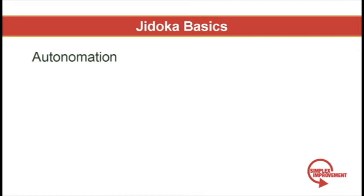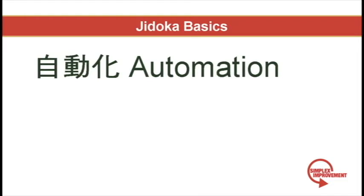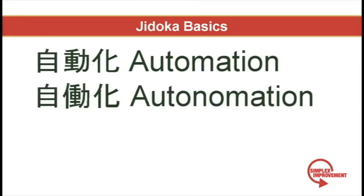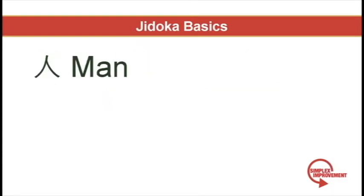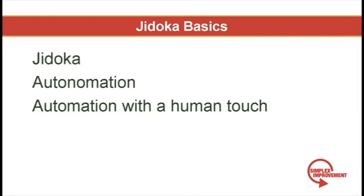Jidoka translates to autonomation. Now don't go looking for autonomation in the dictionary — it doesn't exist in the English language. It's a play off the words autonomous and automation. Toyota combined these two terms into autonomation to describe the word Jidoka. The word you see here is the kanji, or Chinese characters, for the word automation. This is the kanji for autonomation. The difference between these two words is the man or human character. When you insert the man radical into automation, it becomes what Toyota calls autonomation, or Jidoka.